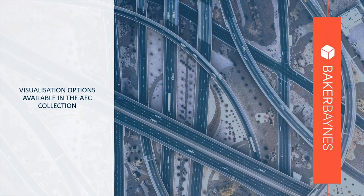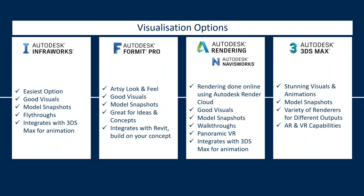Now here are your visualization options available in the AEC collection. I've organized them into four options. InfraWorks — if you're using it, you don't need anything else. The visuals are pretty decent, dynamic, model snapshots are easy, fly-throughs are easy, and you can animate things. It can serve as your base point for your visualization model — I'm a big fan of InfraWorks. Format Pro — if you want a very artsy, sketchy type of look, Format Pro gives you a pretty decent render and the sketches can be incorporated into Revit.